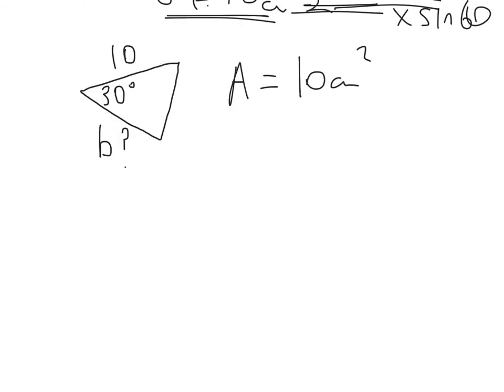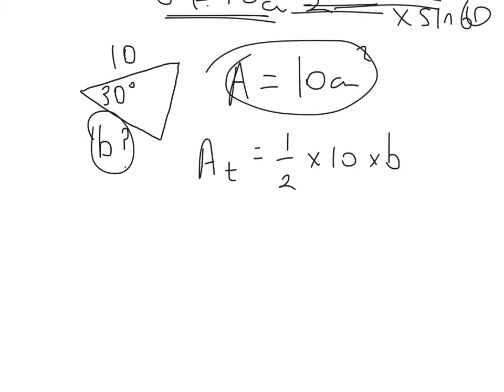Another type of question that we could be asked with the area of a triangle is a working backwards question. So we're given the area of the triangle this time, which is 10. But we're looking to find one of the sides. So we know that the area of the triangle is equal to a half times the side 10 times the other side, which is just b, that's the one that we're looking for,